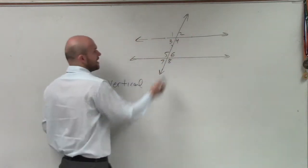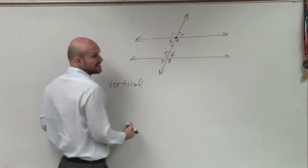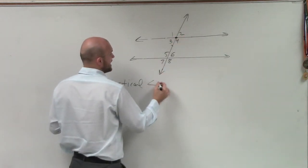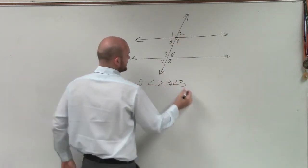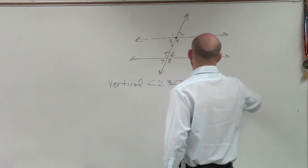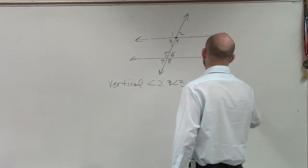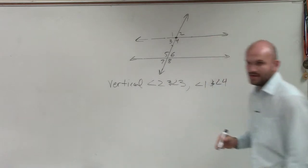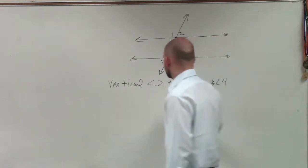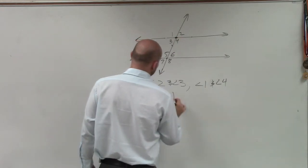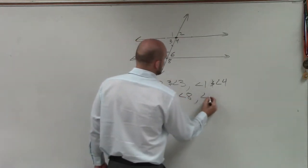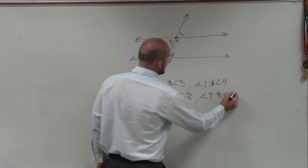So we can look at this and find intersecting lines and a vertex. The angles that are opposite each other: angle 2 and angle 3, and angle 1 and angle 4. At the next intersection, we have angle 5 and angle 8, and angle 7 and angle 6.